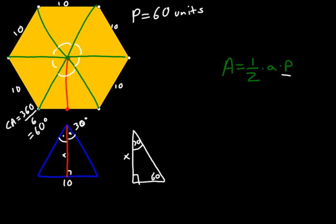Now remember, 30, 60, 90s will happen with a hexagon, not necessarily with other polygons. So always check your work.